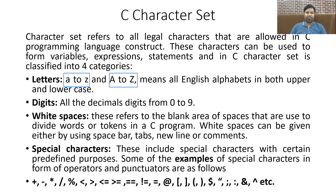Next come digits — all the digits from 0 to 9, or combinations of digits to form larger numbers like 190, 120, and so on. Then white spaces, which refer to the blank areas used to divide words or tokens in a C program.